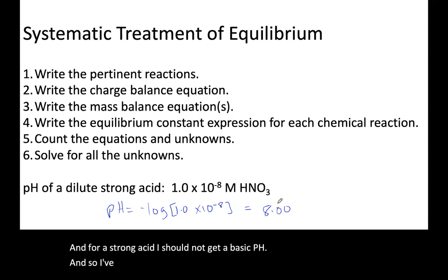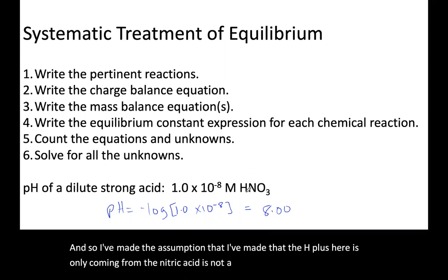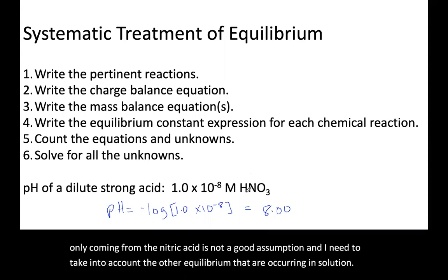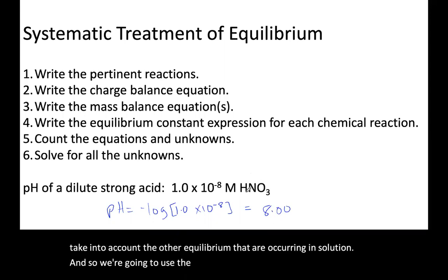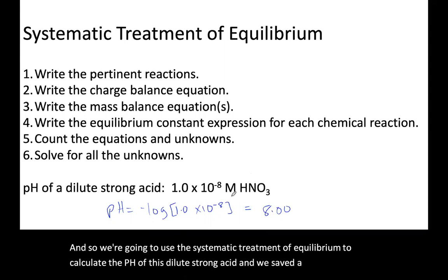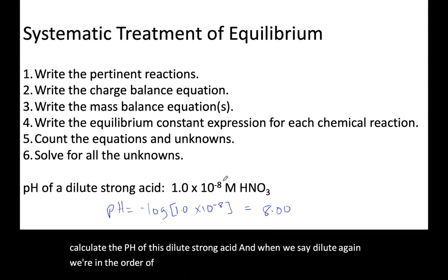The assumption that I've made that the H plus here is only coming from the nitric acid is not a good assumption, and I need to take into account the other equilibria that are occurring in solution. We're going to use the systematic treatment of equilibrium to calculate the pH of this dilute strong acid. When we say dilute, we're in the order of magnitude here that we're getting close to what we would predict with the auto ionization of water, so that 10 to the minus 7.